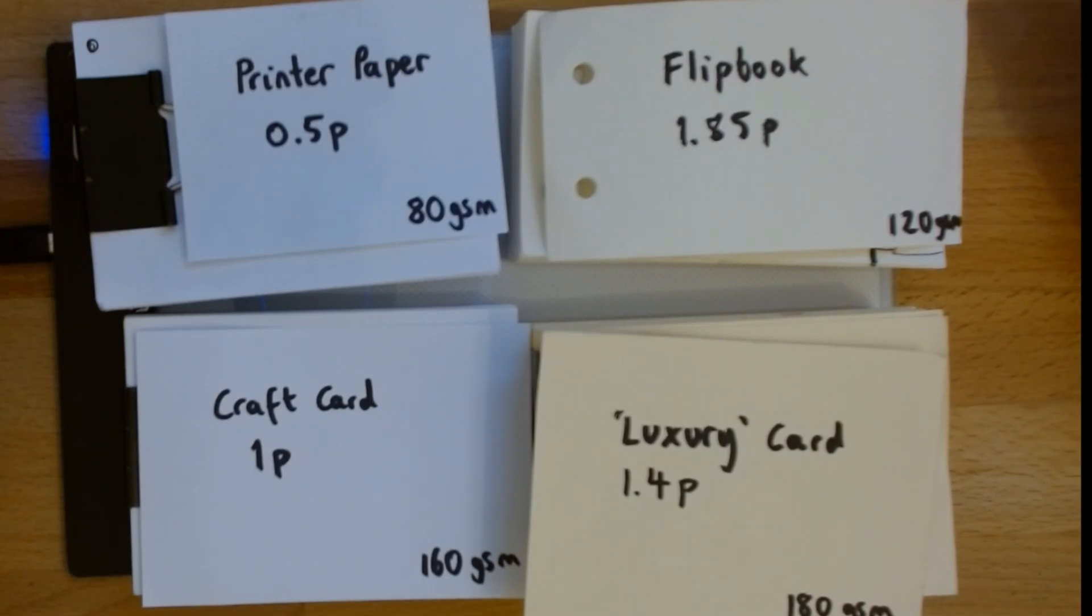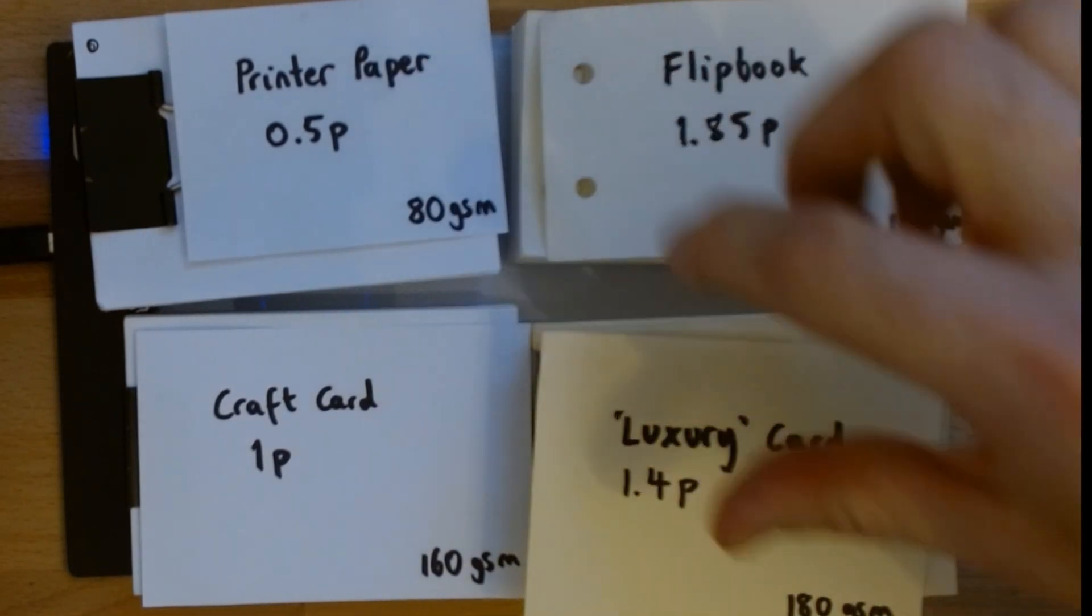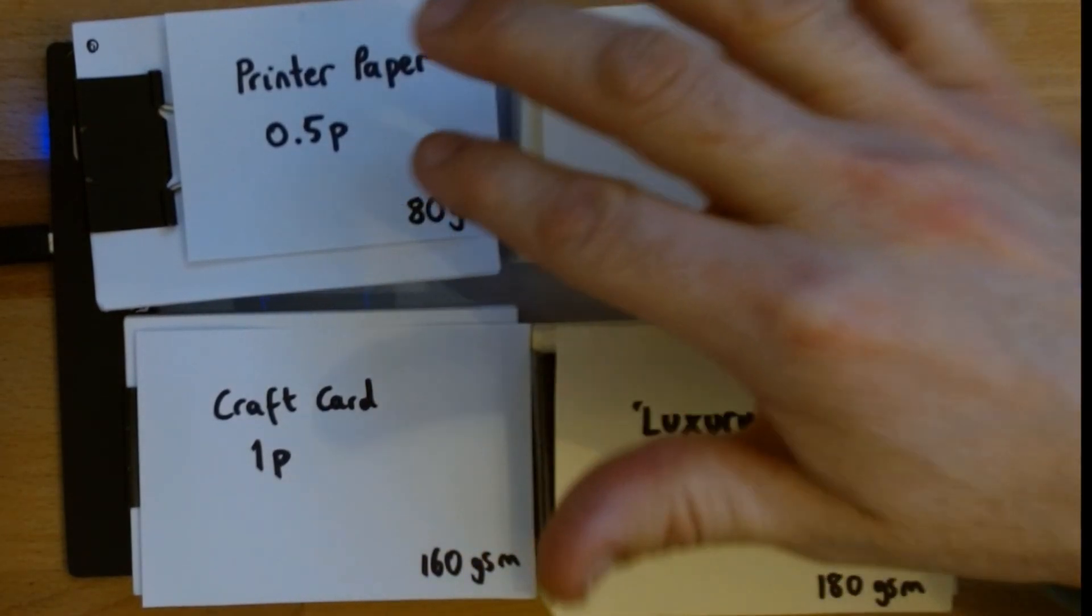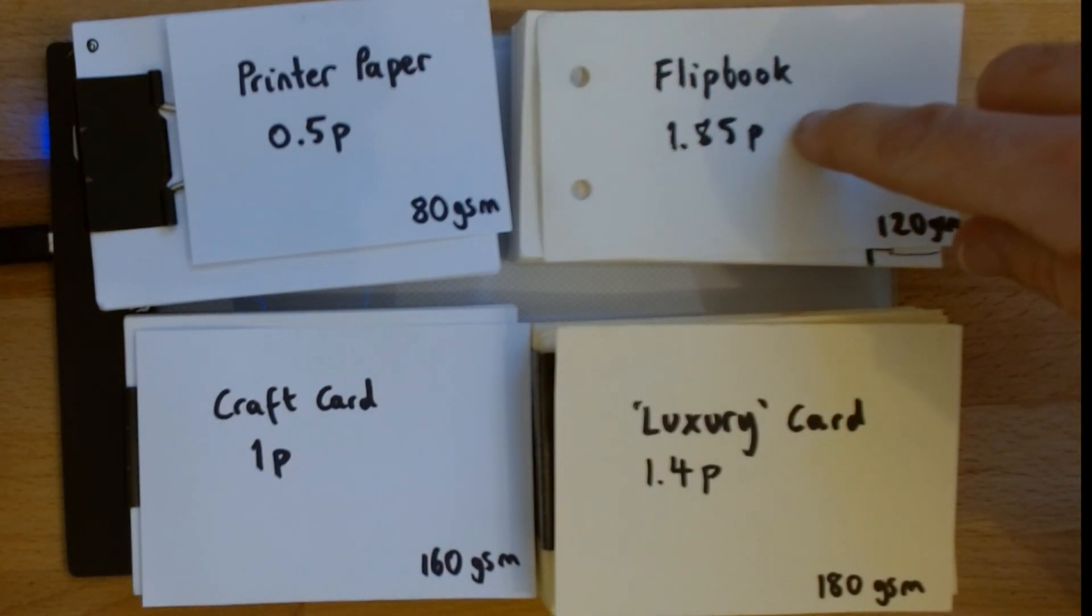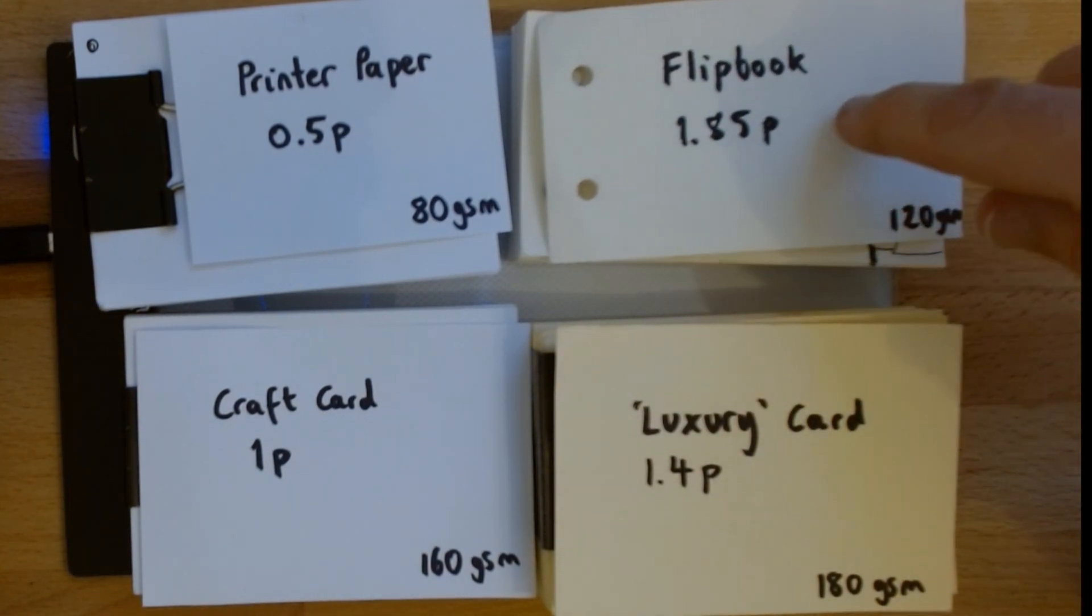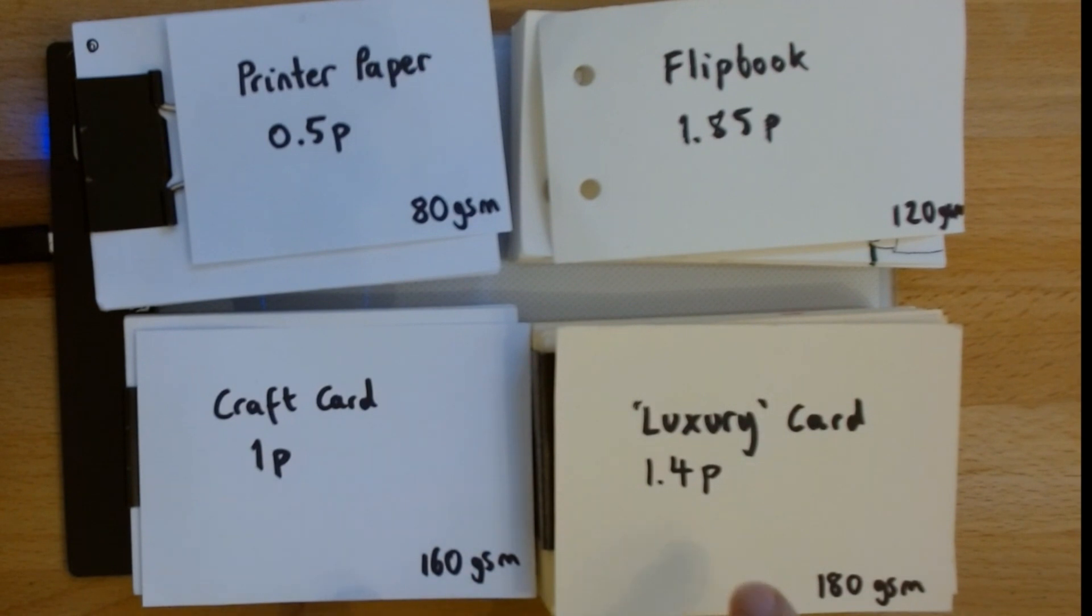For my flipbooks, recently, in the last few weeks, I've used these four different types of paper. I've used regular printer paper, which is the cheapest. I've used purpose-made flipbook paper, which is the most expensive, and I've used two different types of card that I've bought from Hobbycraft, which is a craft shop in the UK.